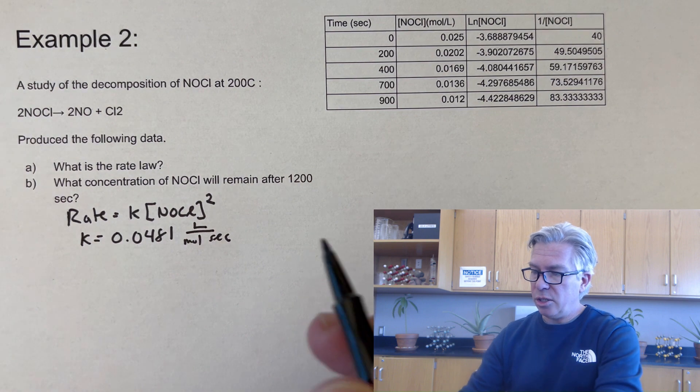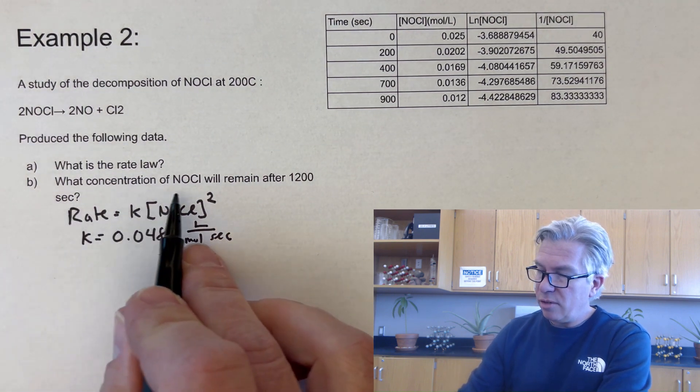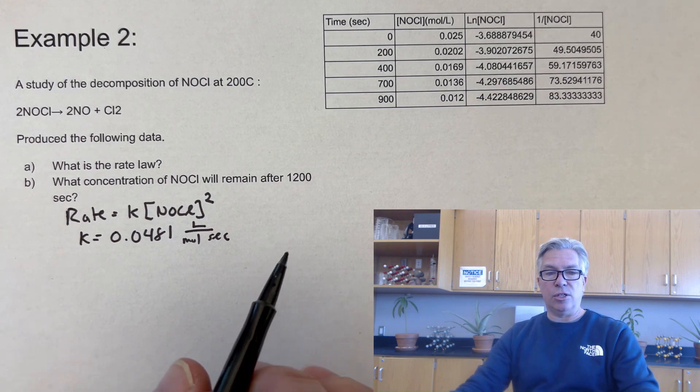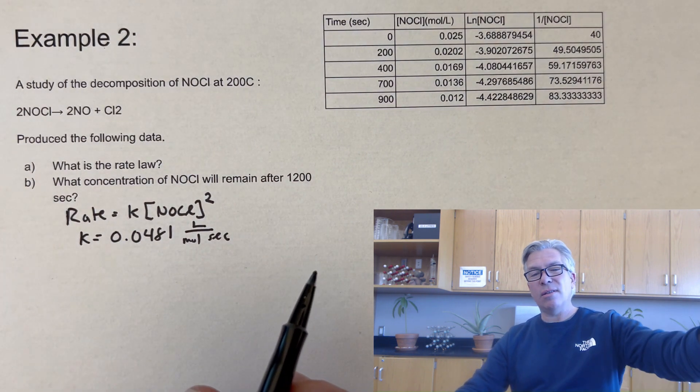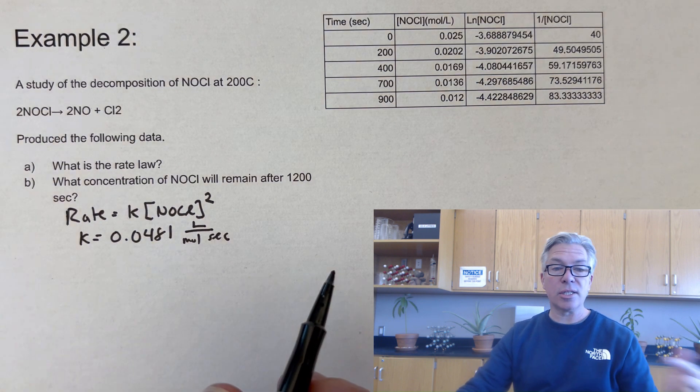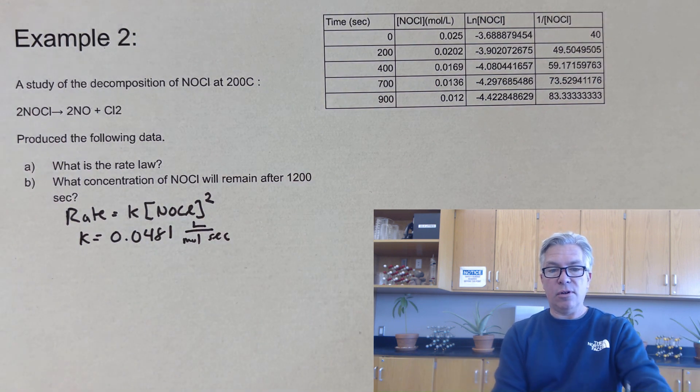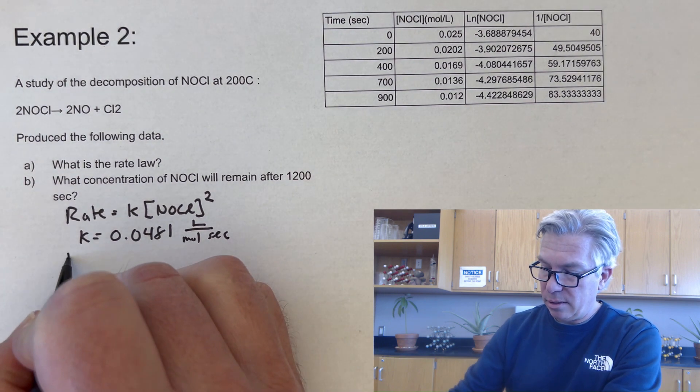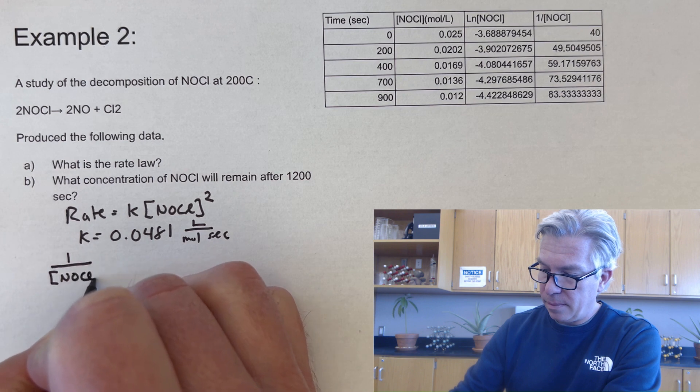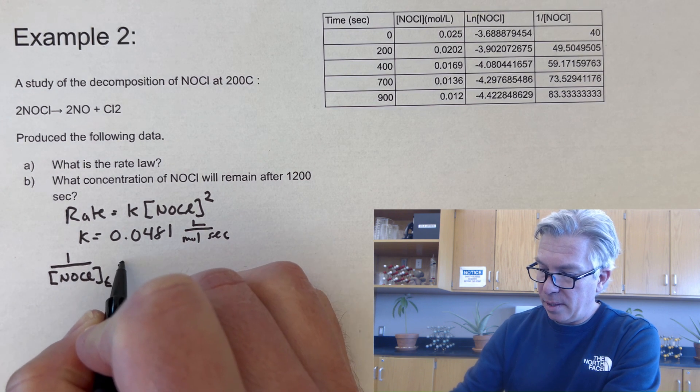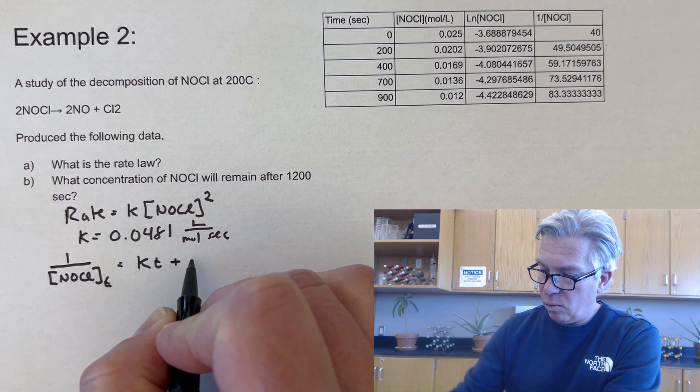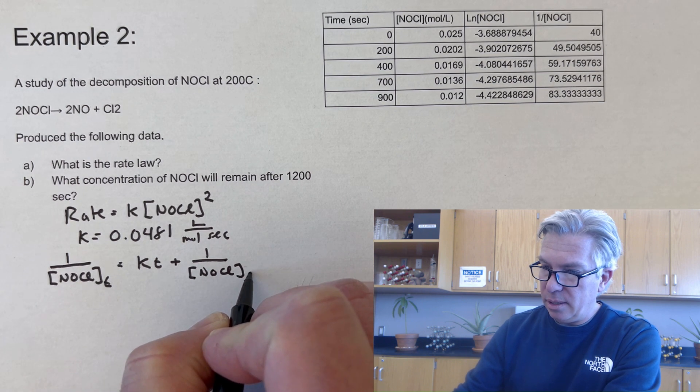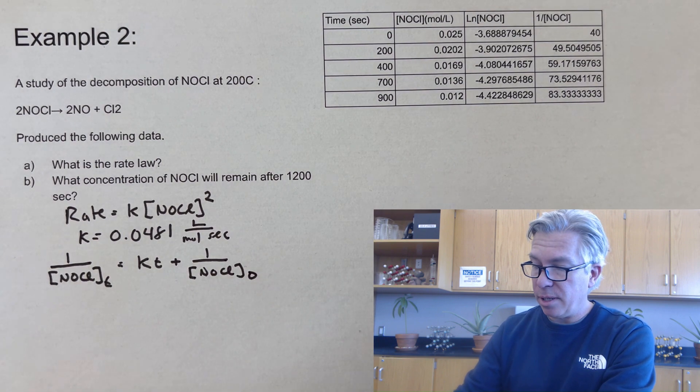And finally, the last part of the question is part B, what concentration of NOCl will remain after 1200 seconds? So whenever you get these questions where you're asked, oh, down the line, how much is it going to be? Or how long is it going to take to get there? Those types of questions involve those integrated rate law equations. So let's go ahead and set it up at time T.